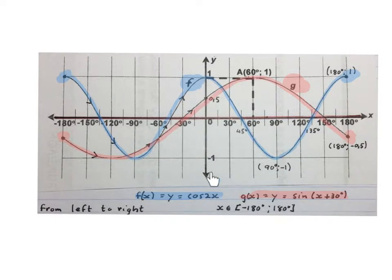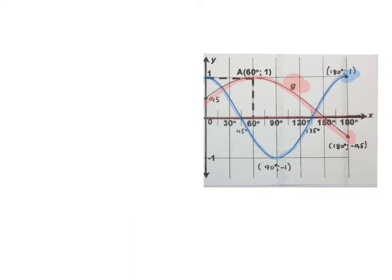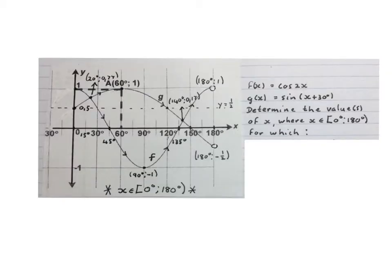Here you have your y-axis and your x-axis like in any Cartesian plane. For the rest of this video we're just going to work with the right half of the graph — from the y-axis towards the right-hand side, from 0 degrees to 180 degrees. I'm going to quickly revise what everything means. On the side it says f of x equals cos 2x, g of x equals sin(x + 30°). The question starts by saying: determine the value or values of x where x is from 0 degrees included up until 180 degrees excluded, for which...